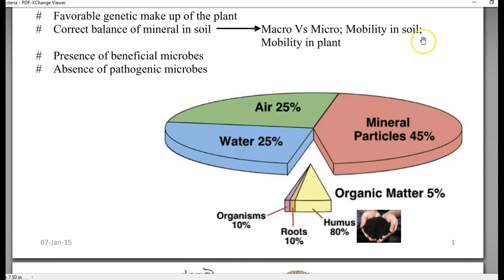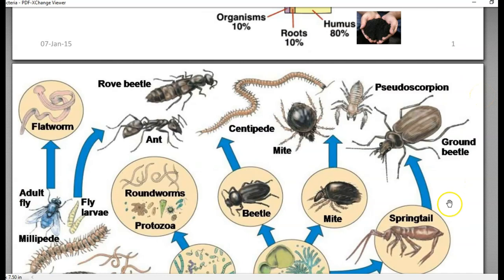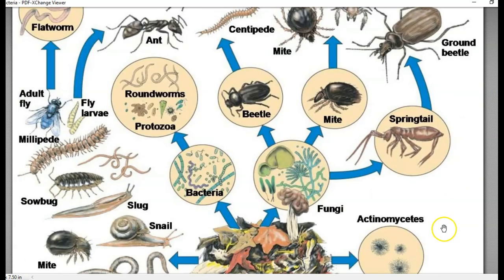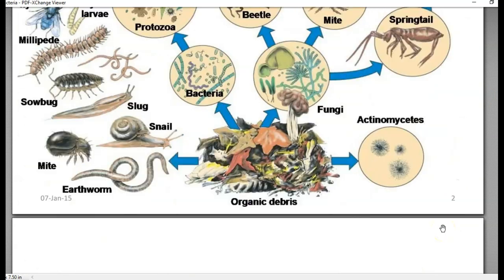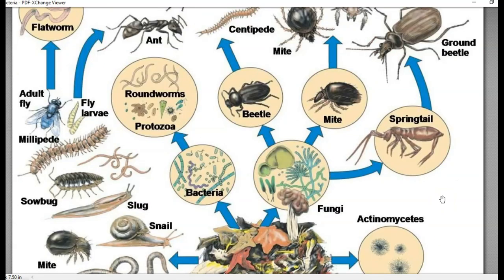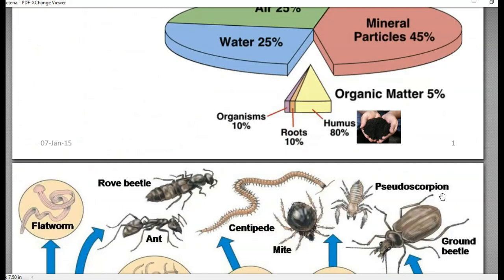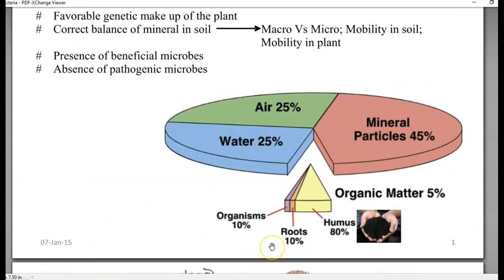Organic matter is again composed of organisms that have been present there. What are all the organisms? Just look at the thing here. These are all the various kinds of organisms that may be present in the soil system. These organisms constitute 10% of the organic matter.